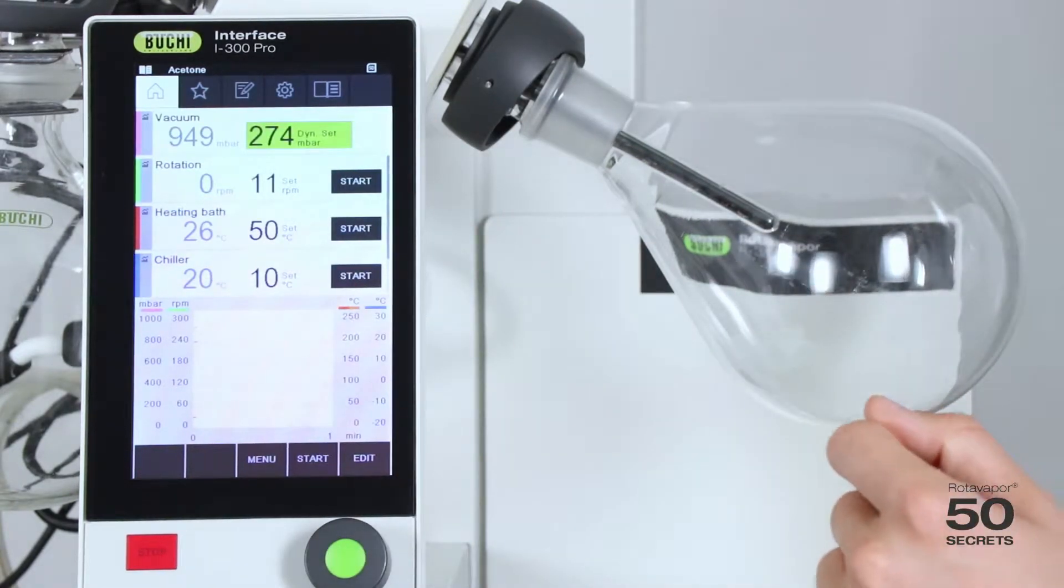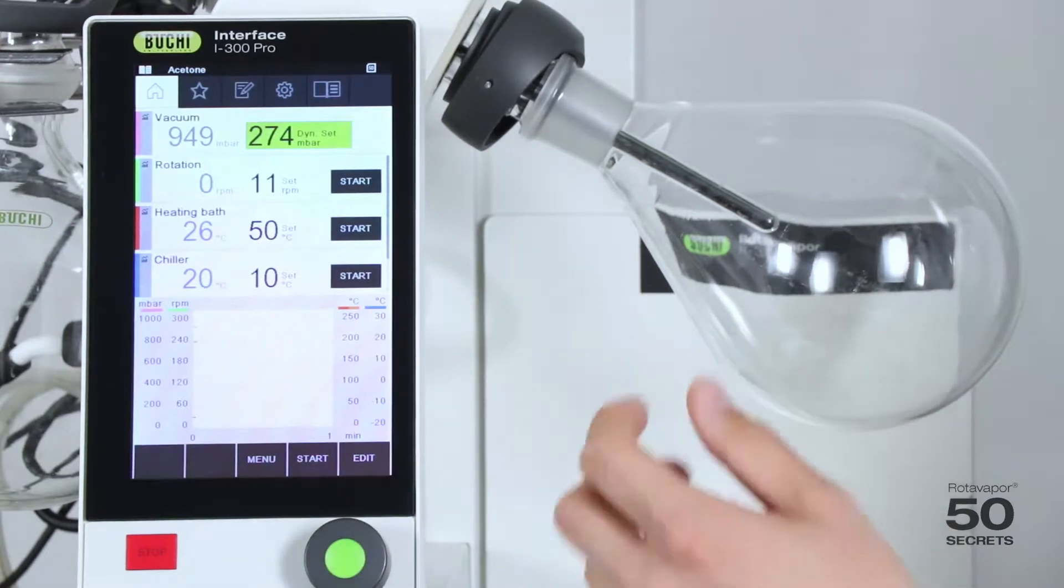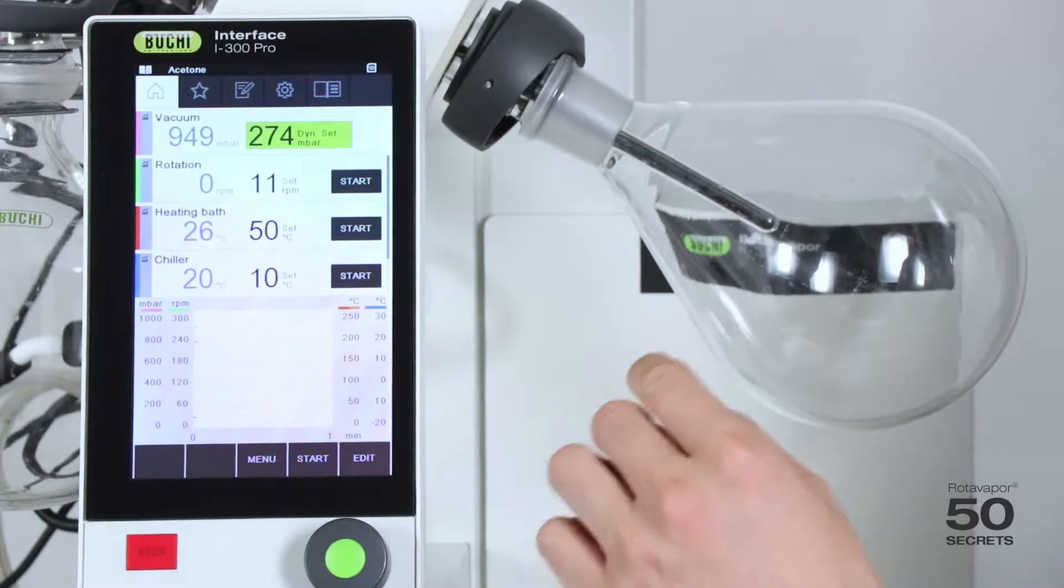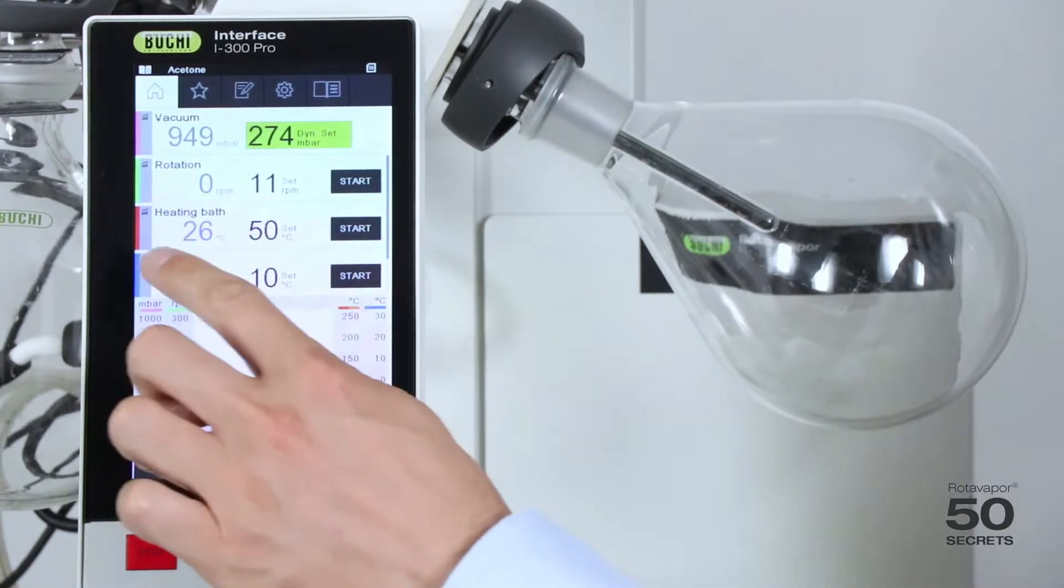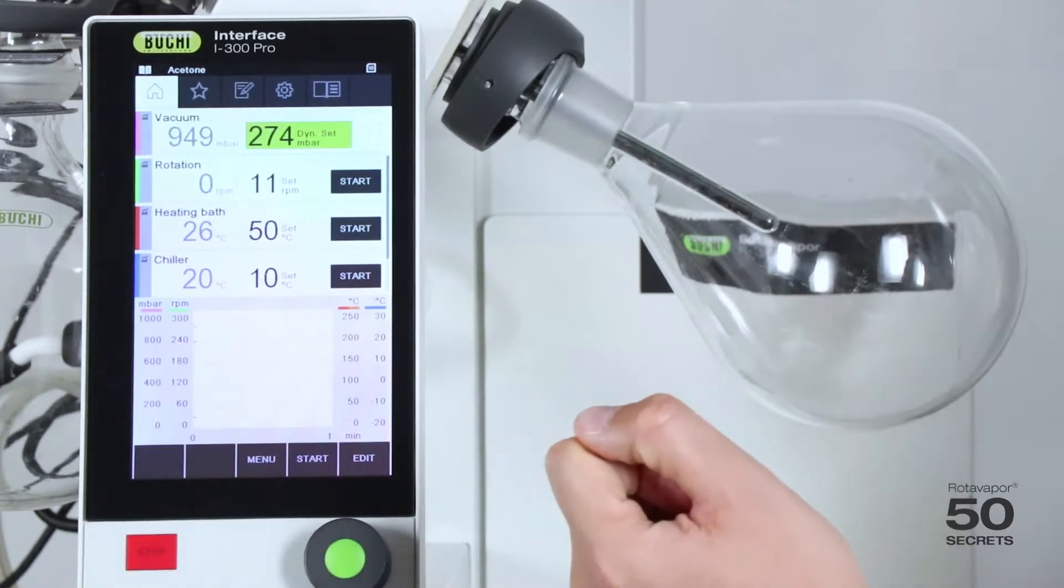Now what is that? That is actually a patented mechanism in order to start quicker with the distillation. Which means at the moment the heating bath is only at 26 degrees, and the chiller is at 20 because we are at room temperature.